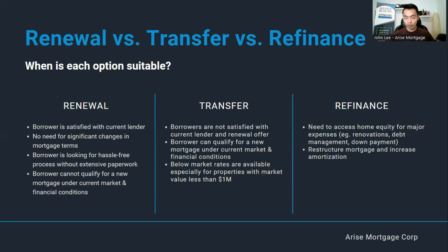Renewal is hassle-free — all you have to do is sign a few pages of paperwork and you're good for, say, five years. For transfers, this option is for borrowers who are not satisfied with their existing lender and whatever offer they're giving. It's a great option for those who can qualify — good income and good credit — because many lenders will want your business. In particular, if your property has a market value of less than $1 million and you reach out to a mortgage broker, we have way more options than just the big banks. These mortgage companies love these types of mortgages and will offer really low rates, undercutting many banks. So if you're in that category and want to do a transfer, definitely reach out to a mortgage broker.